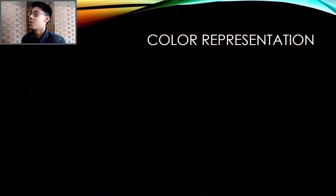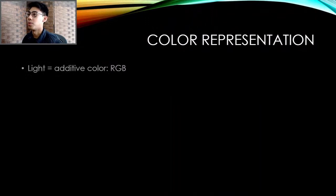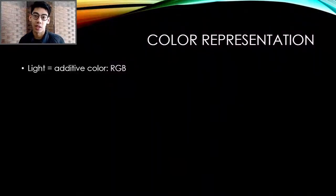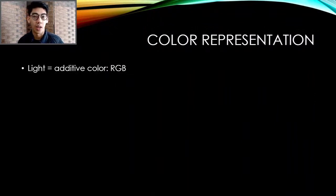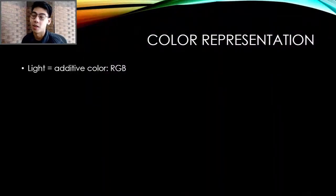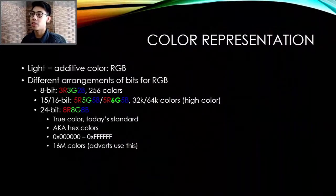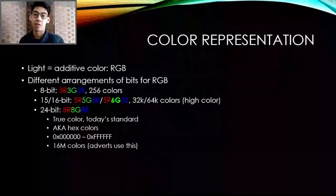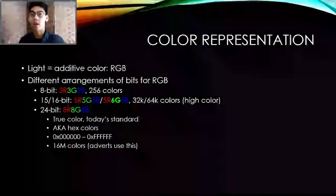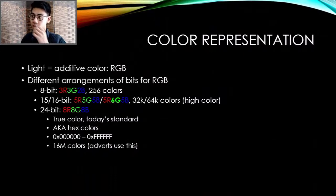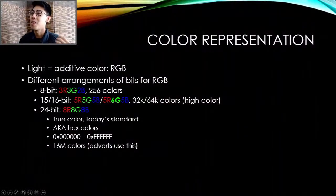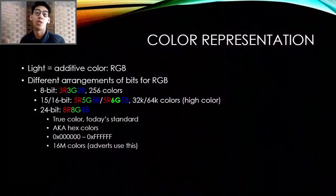How do we represent color in computers? With colored screens and light we always think of it as additive colors — built on three basic colors: red, green, and blue. The addition of which creates all possible colors from black to white and everything in between. In computers there are different ways of arranging bits of RGB, and depending on the color depth you get a different number of bits. In the 8-bit color scheme you have three red, three green, and two blue, totaling 256 colors — 2 to the power of 8.